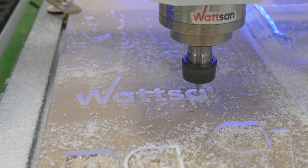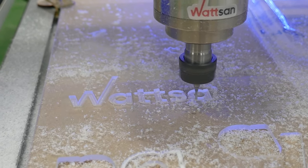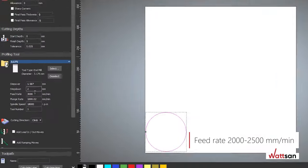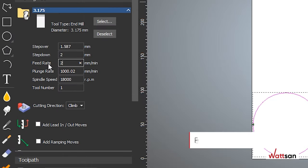In a practical way, we have identified the optimal feed rate for us. It is 2,000 to 2,500 mm per minute. At higher speeds, there is a risk of breaking the cutter.